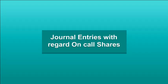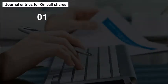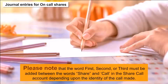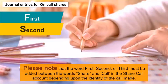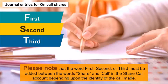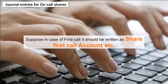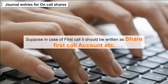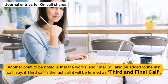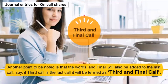Journal entries for on-call shares include: for call amount due and for receipt of call amount. Note that the words 'first,' 'second,' or 'third' must be added between 'share' and 'call' in the share call account, depending on the identity of the call. In the case of the first call, it should be written as 'Share First Call Account.' The words 'and final' will also be added to the last call — for example, 'Third and Final Call.'